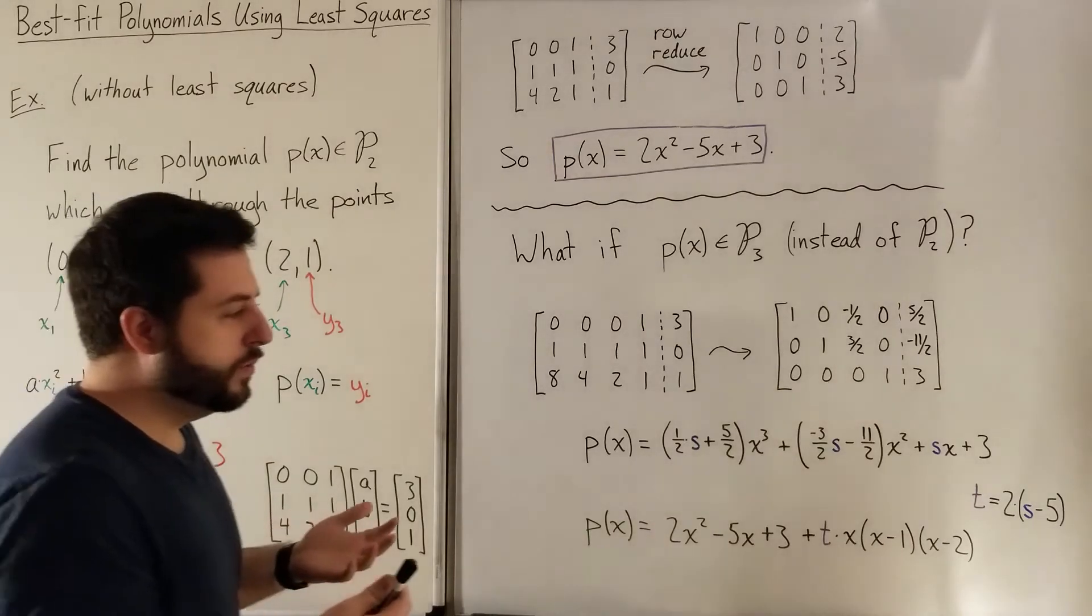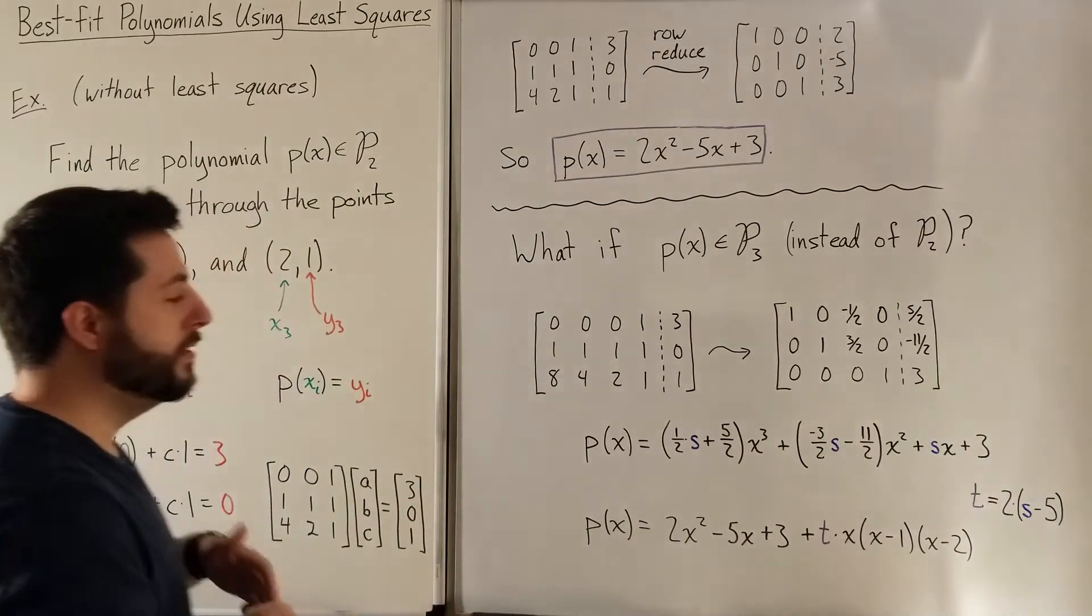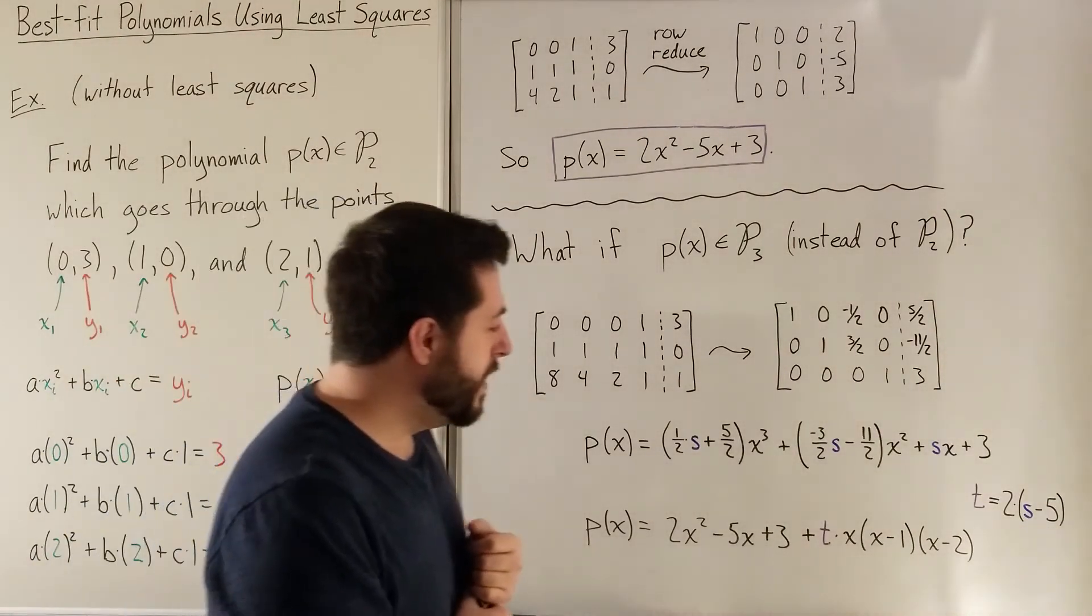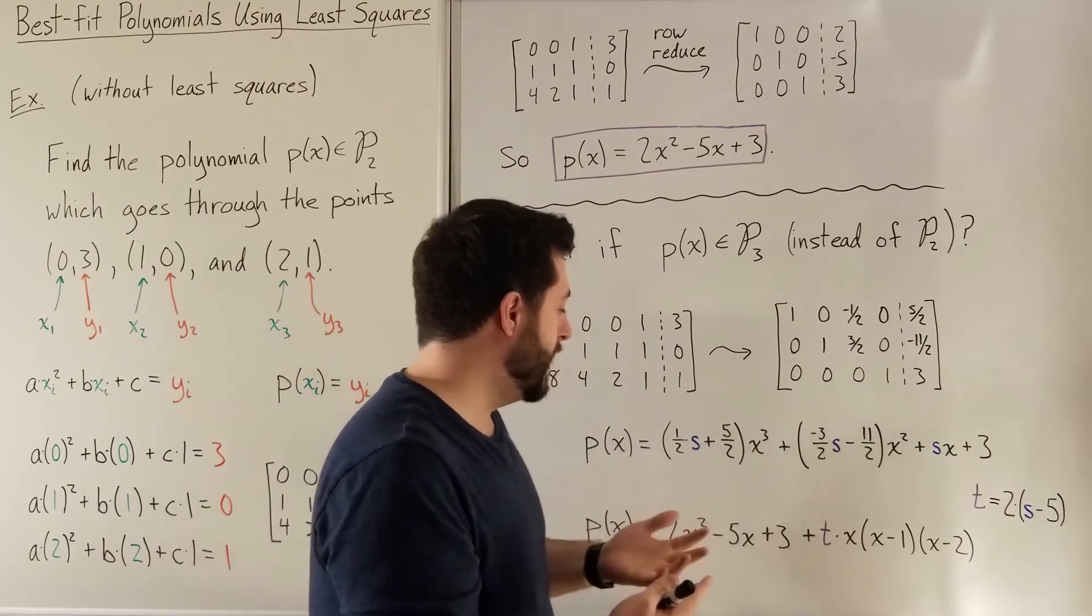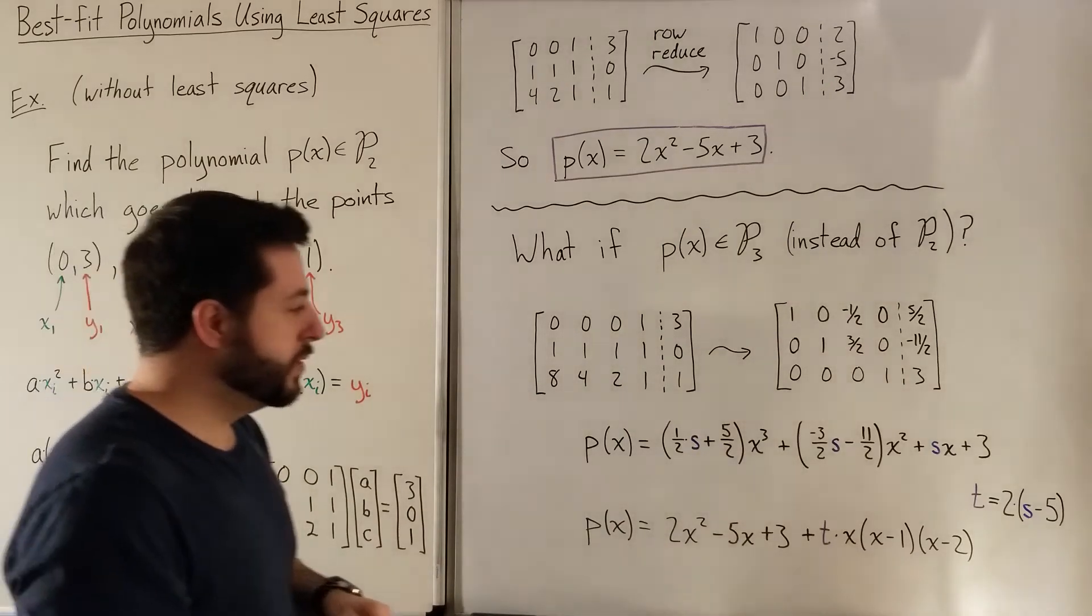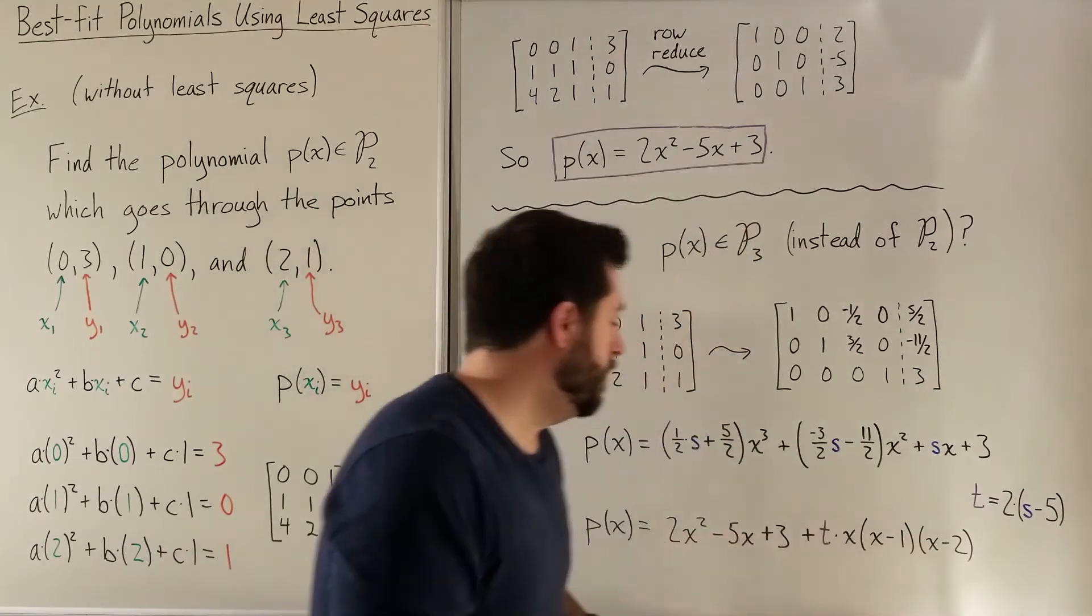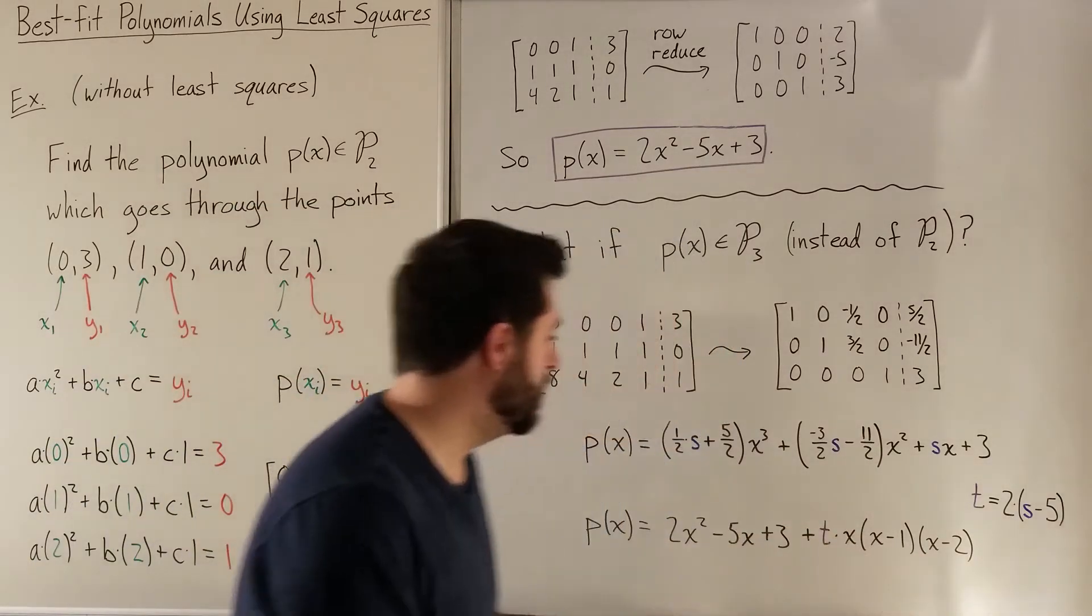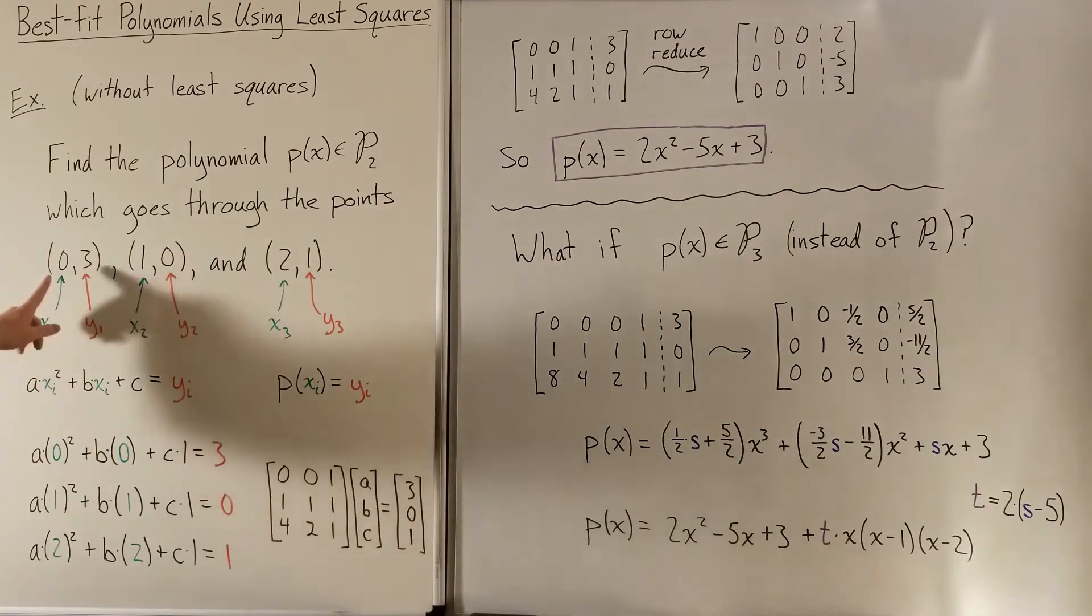now if we're allowed to add in some cubic terms or up to degree three polynomials, then one way to not change what we're getting out in terms of what's happening at x1, x2, and x3 is we can add some multiple of this nice polynomial which doesn't have or which has zero value at those three individual points. So this polynomial x(x-1)(x-2), well when you plug in 0, 1, or 2 into it,